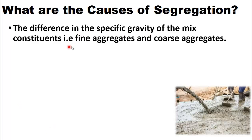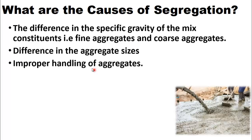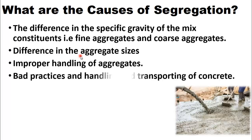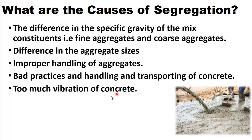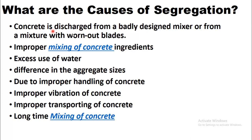Now, coming towards the causes of segregation. The first cause is the difference in specific gravity of the mix constituents — that is, fine aggregates and coarse aggregates. Other causes include improper handling of aggregates, difference in aggregate sizes, bad practices in handling and transporting concrete, too much vibration of concrete, and placing concrete from a greater height.